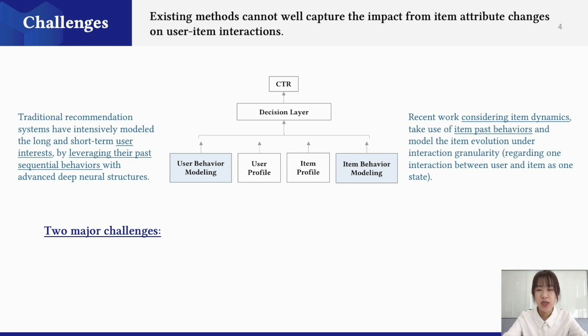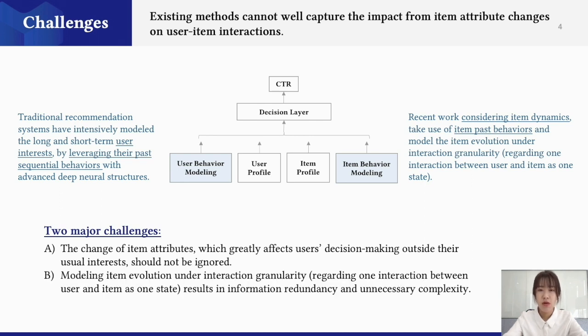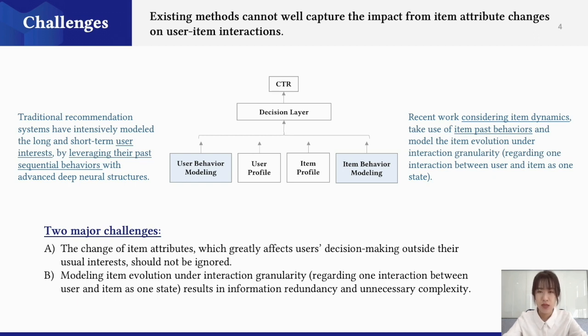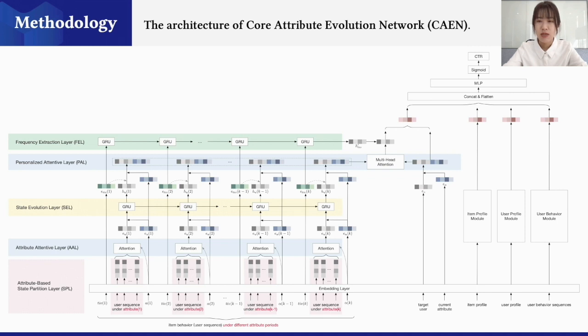Given previous work, two major challenges remain. The first one is the change of item attributes, which greatly affects users' decision-making outside their usual interests, should not be ignored by modeling item evolution. And the second is modeling item evolution under interaction granularity is not a cost-efficient choice. It can result in information redundancy and unnecessary complexity. So, in order to address these challenges, instead of regarding one interaction as one state, we partitioned the item behavior sequence into several states according to the value of its attribute. And proposed our CAEN framework to capture the whole process of item evolution and quantify the matching degree between target user and target item under the current attribute.